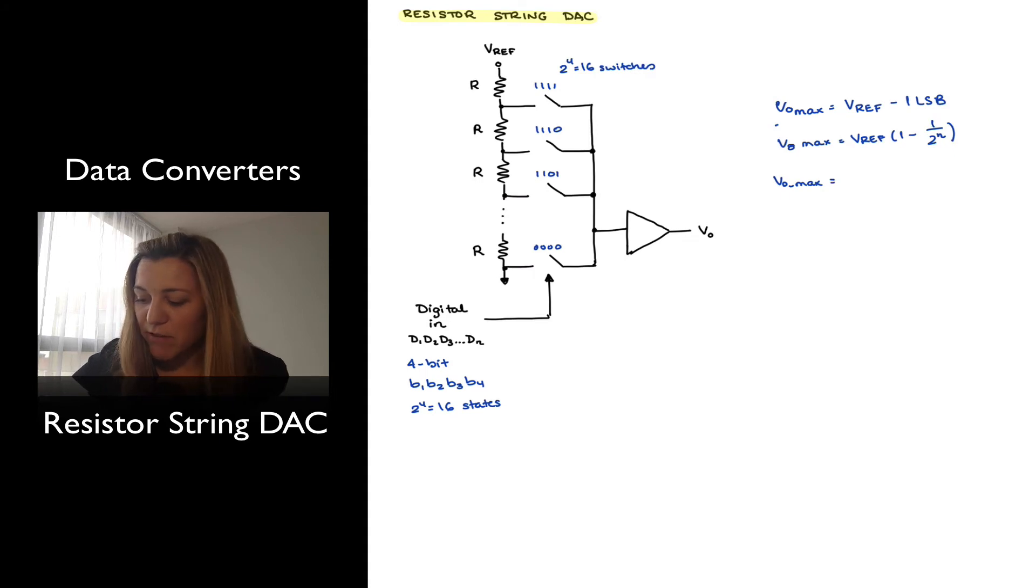So let's imagine my VREF was equal to 2.5 volts, just for the sake of example. This will be 2.5 times (1 minus 1 over 2 to the 4, or 1 over 16), which will be equal to 2.34 volts.